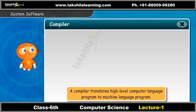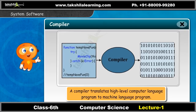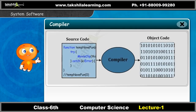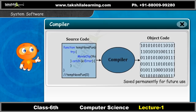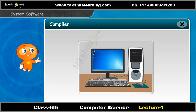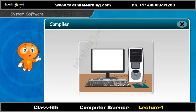A compiler translates a high-level computer language program into a machine language program. This translated program is called the object program or object code, which is saved permanently for future use. It reports program errors to the user.